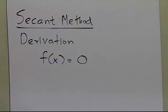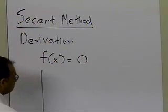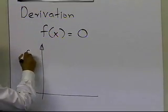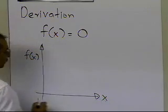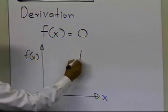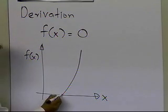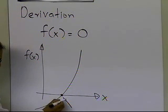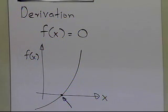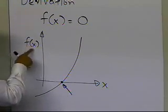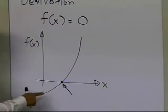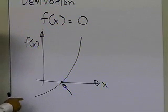If you have an equation where the left-hand side is f(x), suppose we plot f(x) — the left-hand side of the equation, which is the function — as a function of x, and we find out where it becomes 0, that becomes the root of the equation. So we want to find where f(x) becomes 0, and that's what we're going to derive using the numerical method called the secant method.